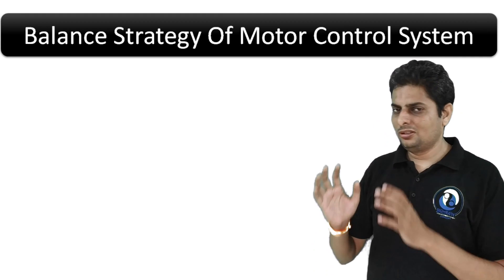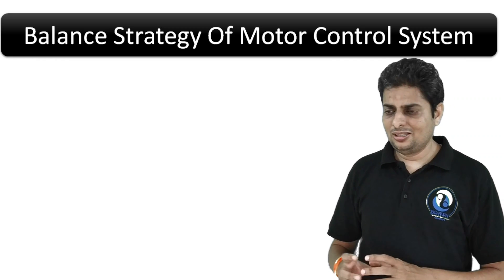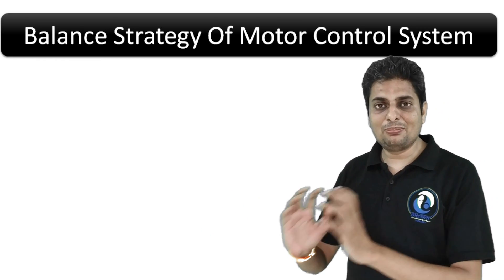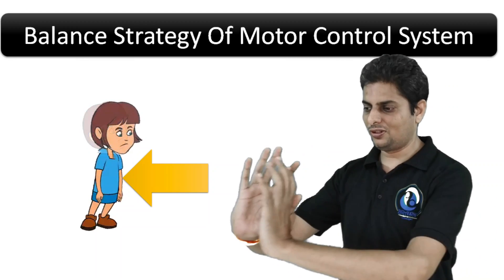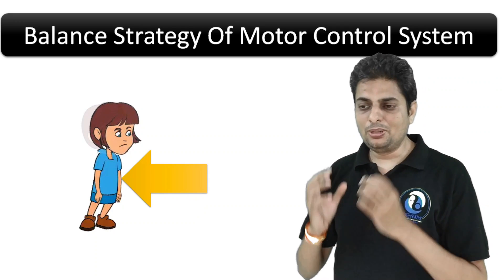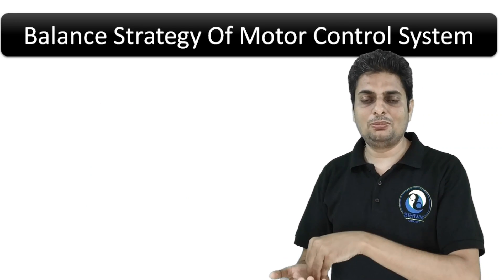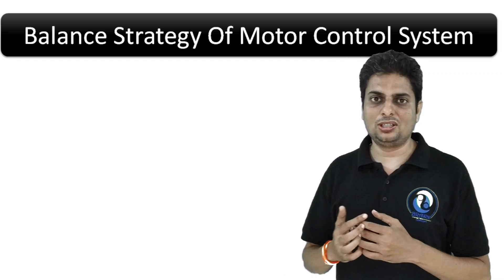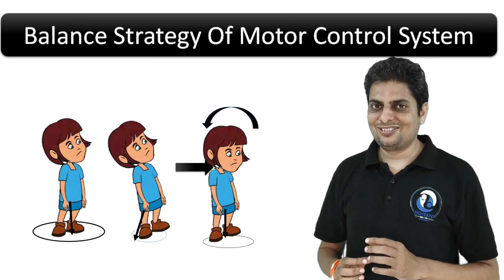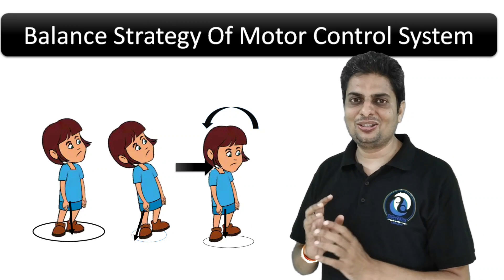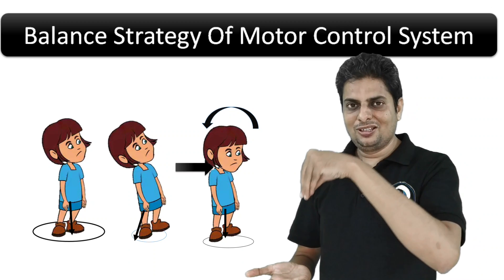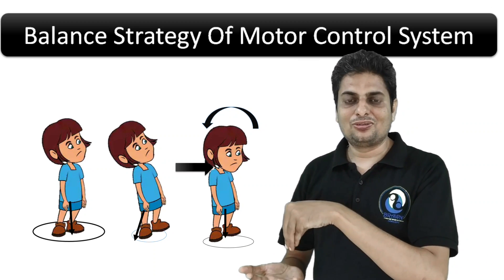Now I want to put light on a less discussed movement. When you push someone to elicit an ankle strategy, simultaneously the head also moves forward. This is an attempt by the motor control system to bring the center of gravity within the base of support, which is suddenly shifted posteriorly due to the push. So forwarding the head is a strategy by the motor control system to maintain COG within the base of support.